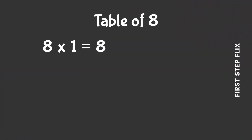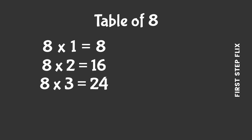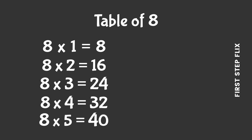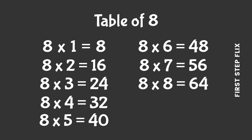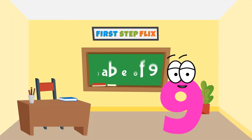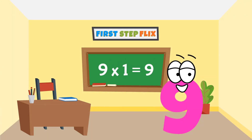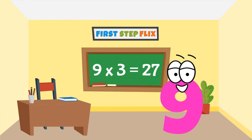8 ones are 8, 8 twos are 16, 8 threes are 24, 8 fours are 32, 8 fives are 40, 8 sixes are 48, 8 sevens are 56, 8 eights are 64, 8 nines are 72, 8 tens are 80.